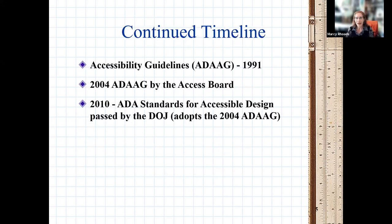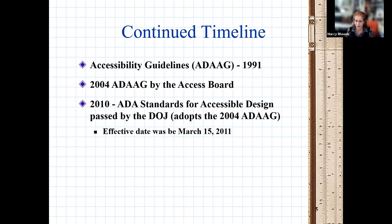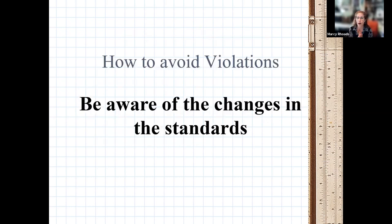In 1990 the law passed; in 1991 the design guidelines for Title Three were published. Those 1991 guidelines are no longer in place. In 2004 they were rewritten by the U.S. Access Board and in 2010 passed into law as the 2010 ADA Standards for Accessible Design, which became mandatory on March 15, 2012. I still find contractors and even some architects and civil engineers using notes from the 1991 version.